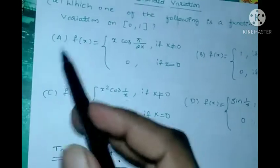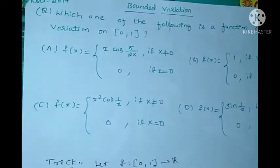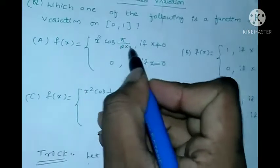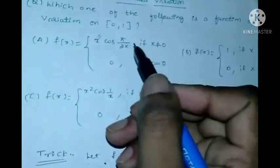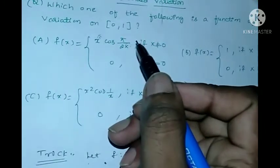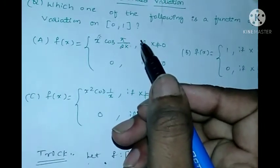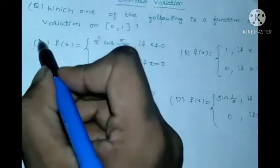Now we check Option A. Here the alpha value is 1 and the beta value is 1. Since 1 is not greater than 1, this is not correct.